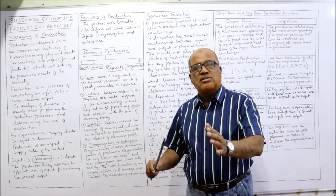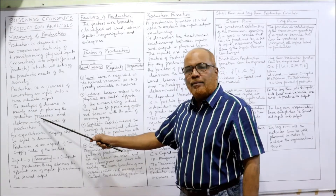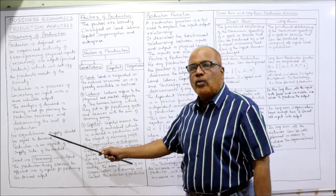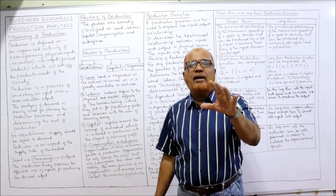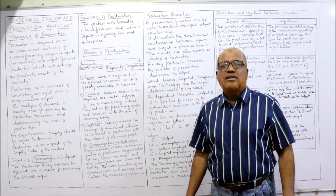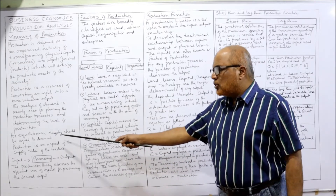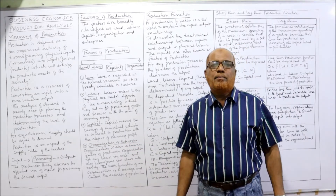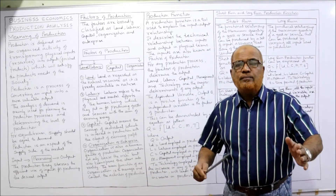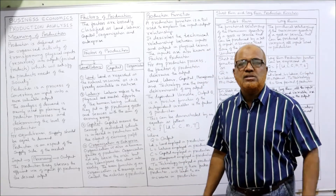Remember: first comes demand analysis, then supply analysis, then production analysis. Production depends on supply, and supply depends on demand. For equilibrium — where total demand and total supply are equal — the producer should supply exactly the quantity demanded in the market. Supply should neither be less nor more. Production is an aspect of the supply side.